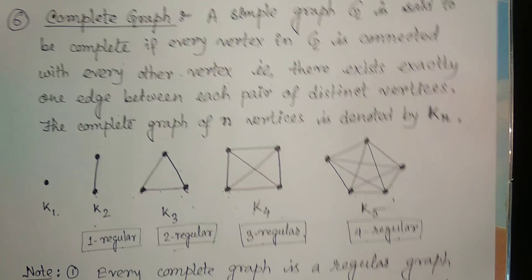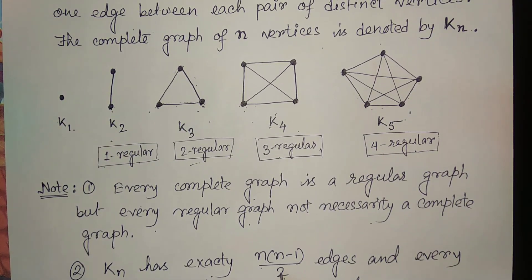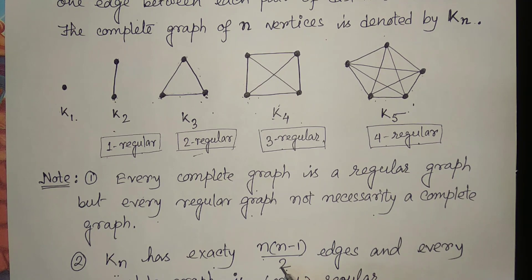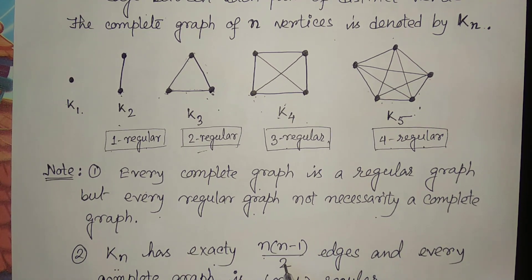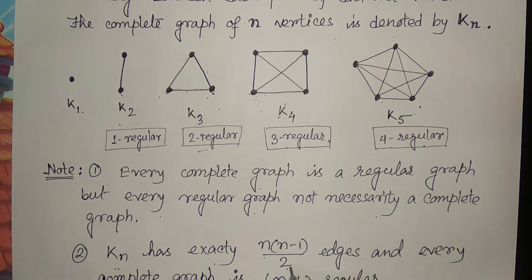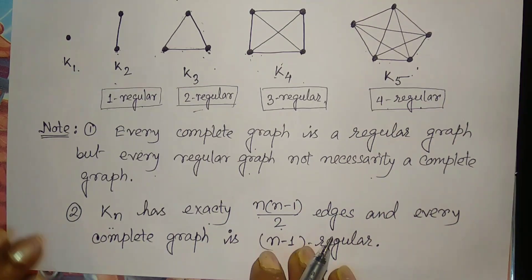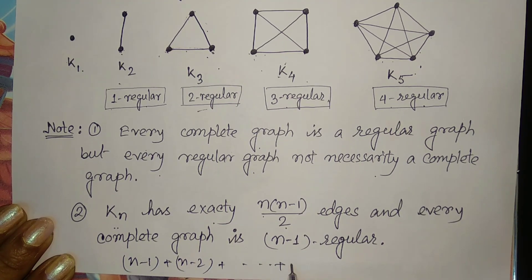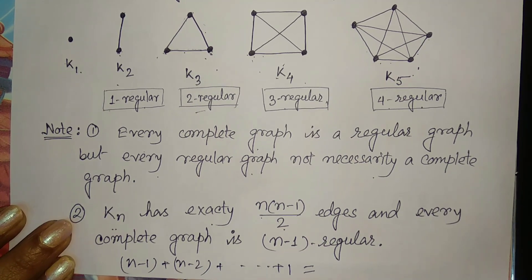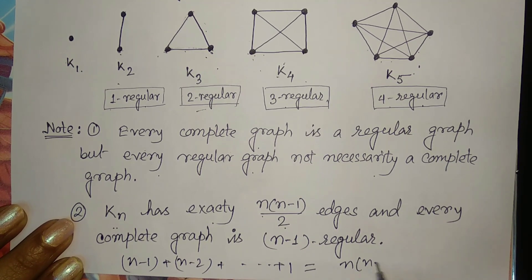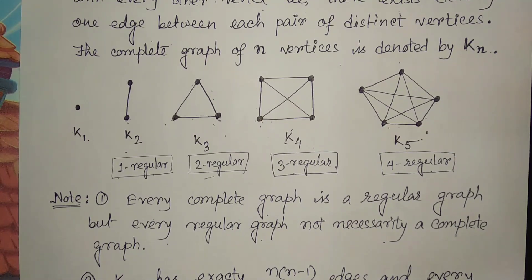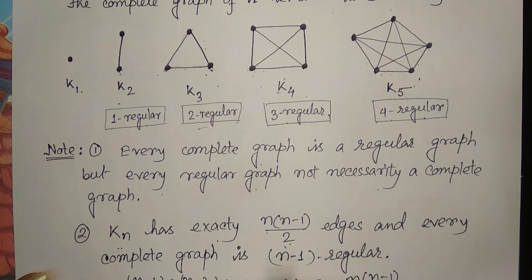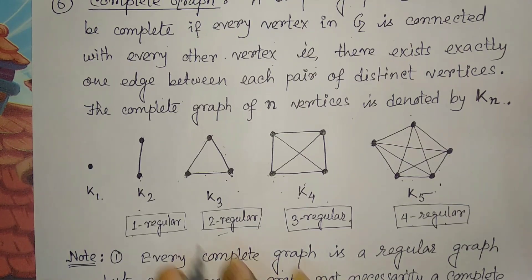So if we add all those quantities — n minus one, n minus two, all the way down to one — the formula is n(n-1)/2. Therefore the complete graph has exactly n(n-1)/2 edges, and every complete graph is (n-1)-regular, which we have already demonstrated.